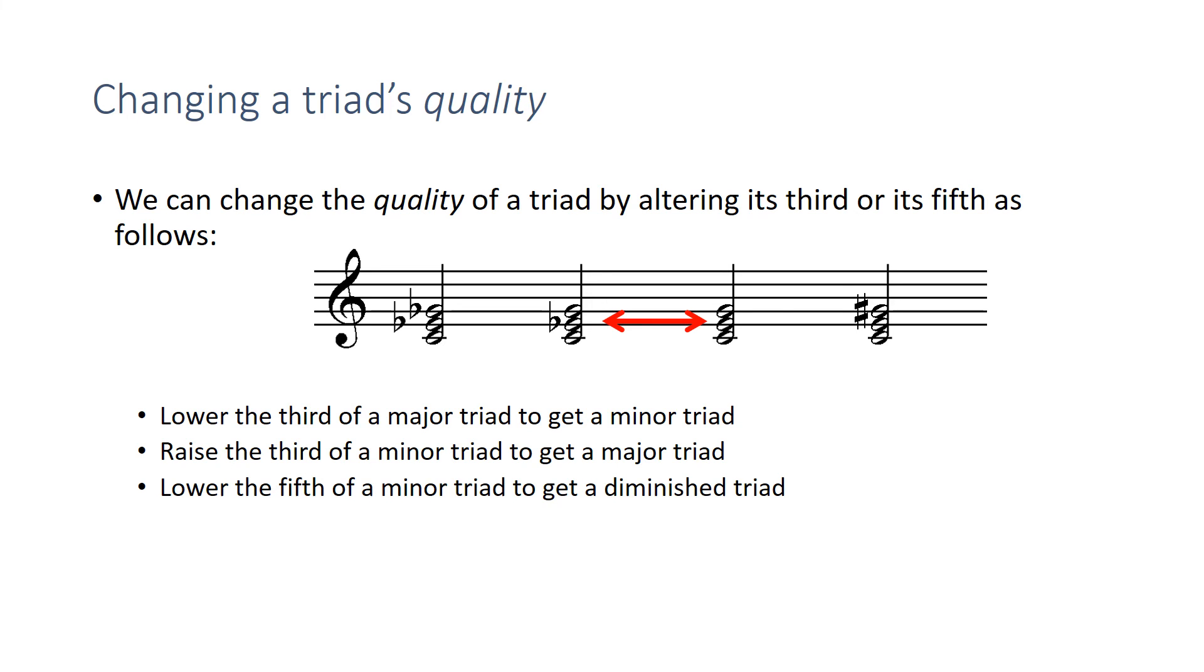You take any minor triad and lower the fifth, and you get a diminished triad. So I take this C minor, lower the fifth, and it becomes diminished. Don't go directly from major or anything else, right? It's from a minor triad. If you lower the fifth, it becomes diminished. That gives you both minor thirds stacked on top of each other.